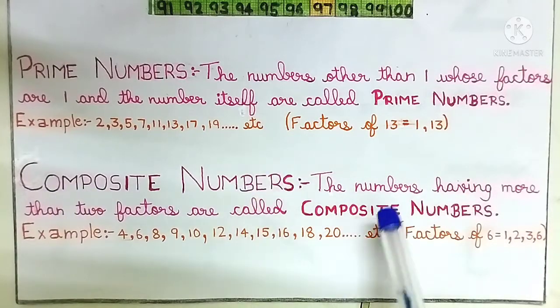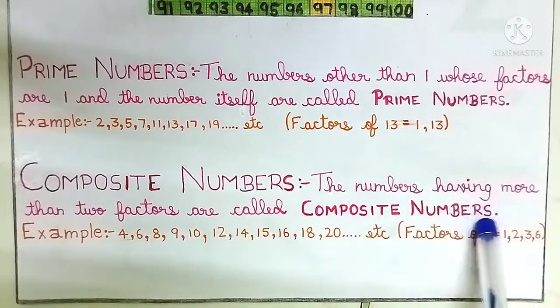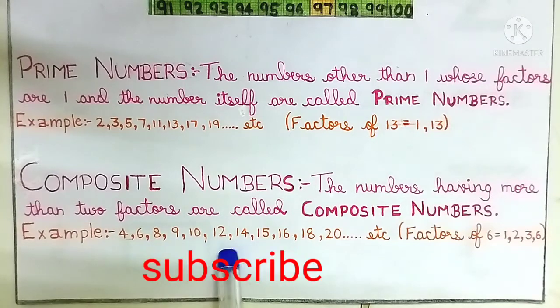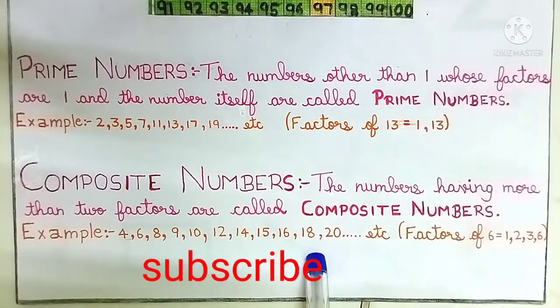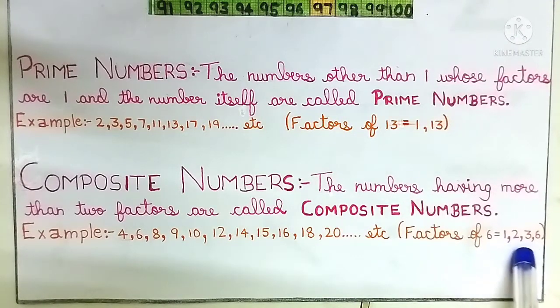Composite numbers: The numbers having more than 2 factors are called composite numbers. Example: 4, 6, 8, 9, 10, 12, 14, 15, 16, 18, 20, etc. Factors of 6: 1, 2, 3, 6.